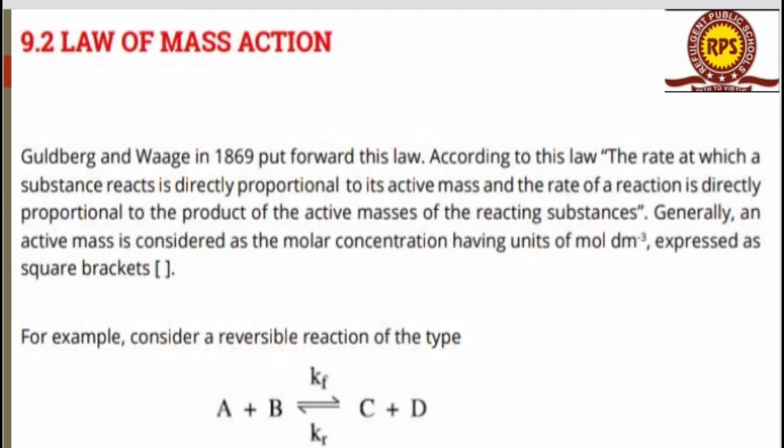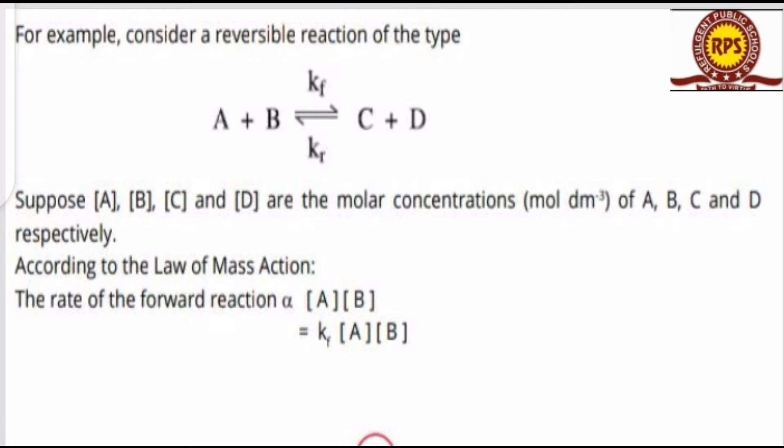Generally, active mass is considered as molar concentration. The concentration we use is expressed as mole per decimeter cubed and we can write it in brackets. For example, for a reversible reaction of the type A plus B going to C and D, we write the molar concentrations of A, B, C and D respectively according to the law of mass action.